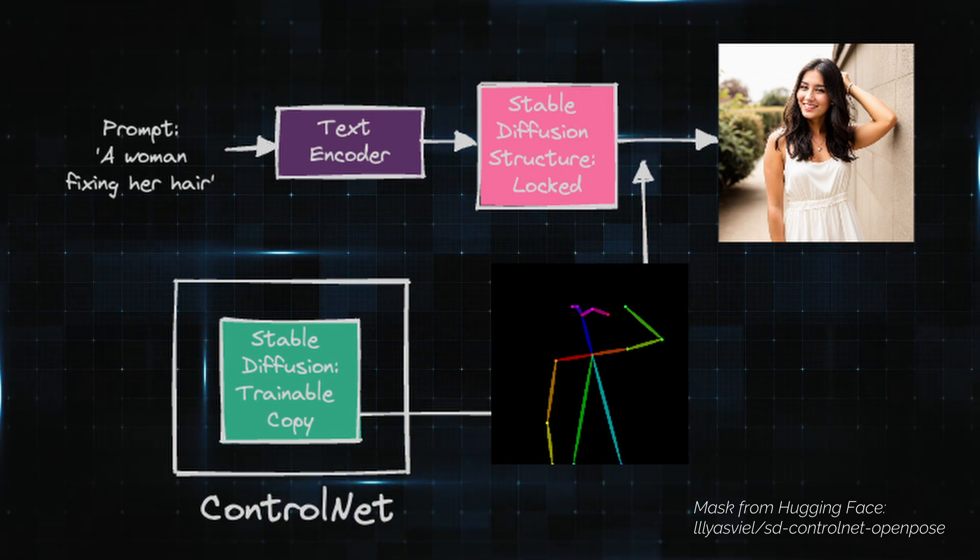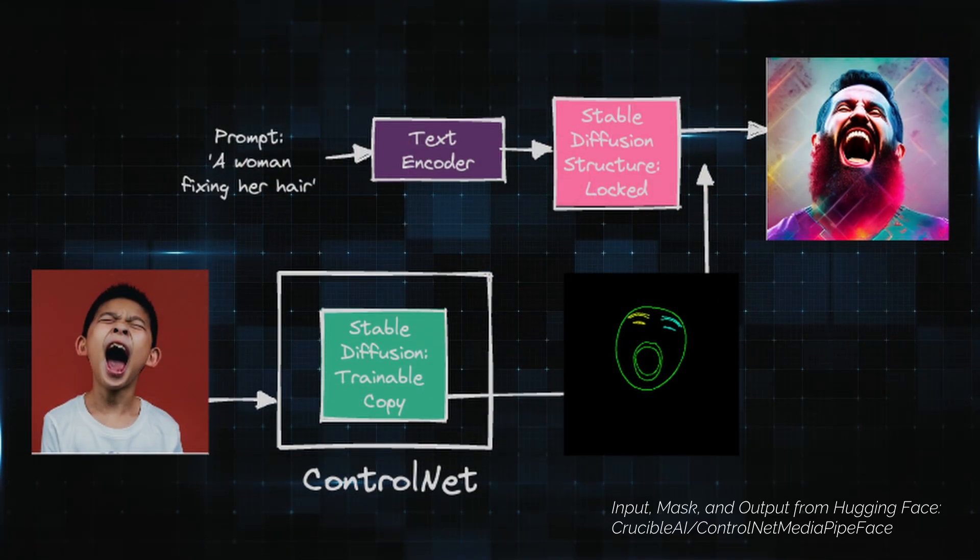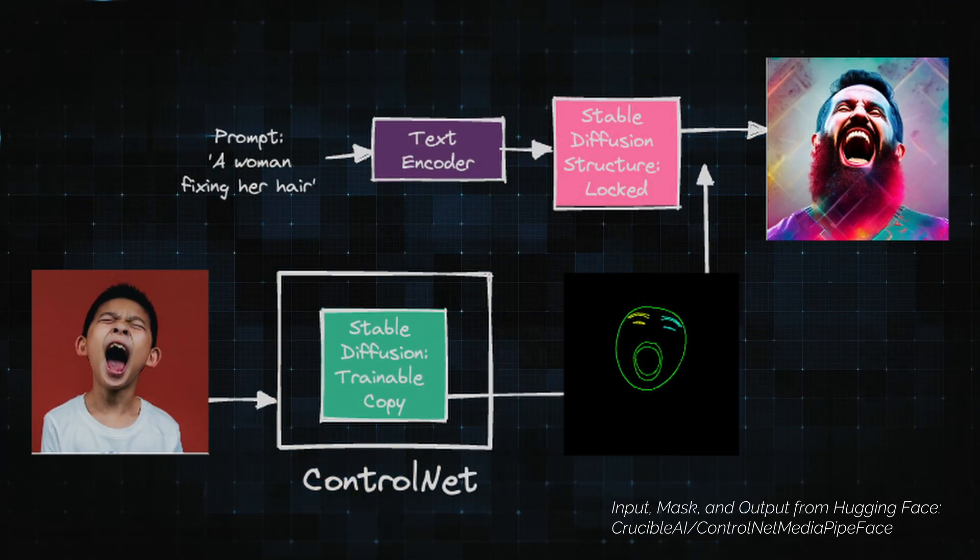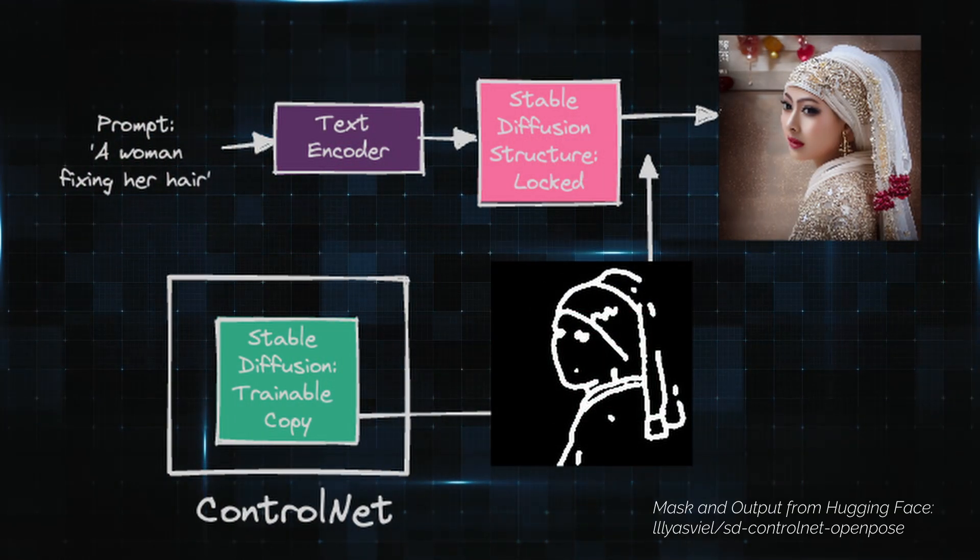ControlNet is a model which allows you to control your diffusion model — Stable Diffusion — when generating an image. It means that we can generate an image based on some conditioning, and this conditioning can be a specific pose, a specific facial expression, or a sketch. Depending on what output we want to generate, we need to use different control models, and sometimes we can use more than one.